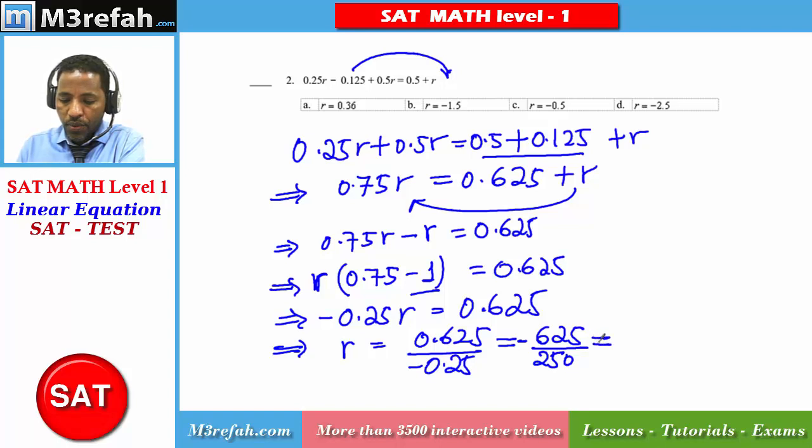If you simplify this one you will get 25 can divide 625. So 625 by 25 will be negative 25 divided by 10 which gives you negative 2.5.